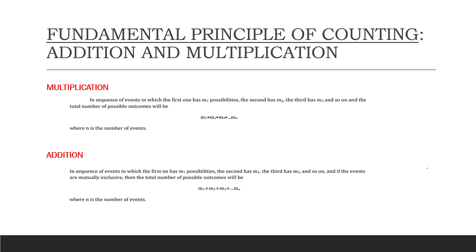The fundamental principle of counting covers addition and multiplication. For the multiplication rule: in a sequence of events in which the first has m1 possibilities, the second has m2 possibilities, and so on, the total number of possible outcomes is found by multiplying the possibilities. For the addition rule: in a sequence of mutually exclusive events, the total number of possible outcomes is the sum, where n is the number of events.